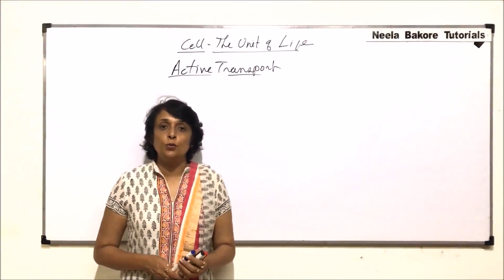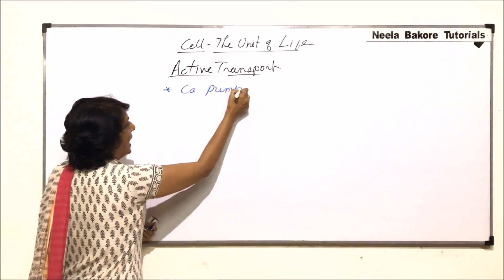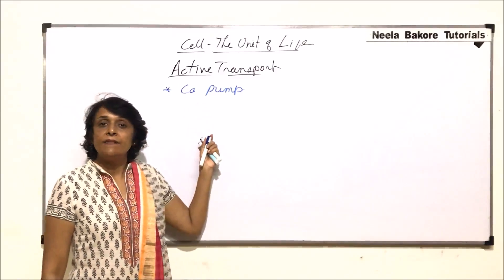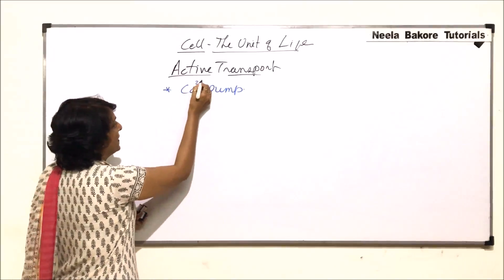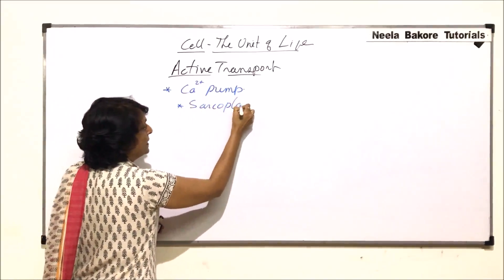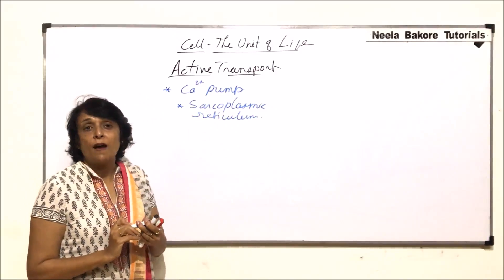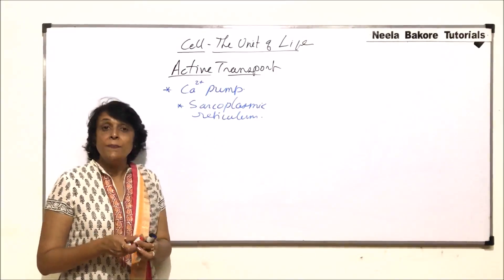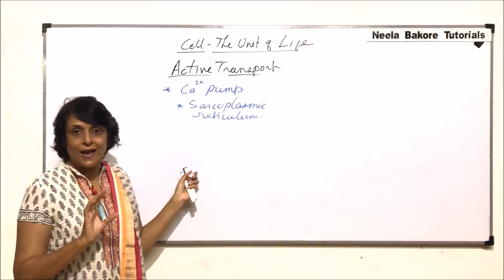In this part we will take up the other two remaining active processes of transport. One is the calcium pump. As we talked of different types of pumps like sodium-potassium pump, only sodium pump, only potassium pump, similarly there are only calcium pumps — proteins which help in transport of calcium ions. One location where we find these pumps is the sarcoplasmic reticulum, which is the endoplasmic reticulum found in muscles. It acts as a storage place for calcium ions, which are essential for muscle contraction.